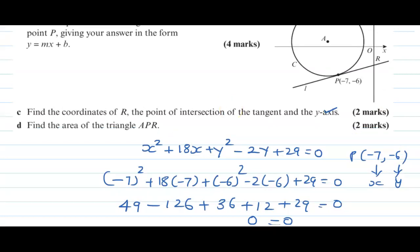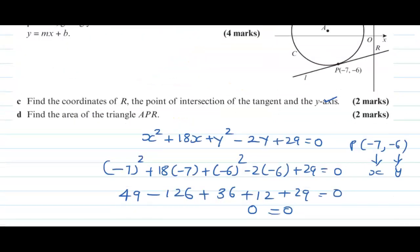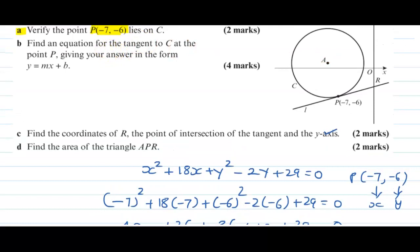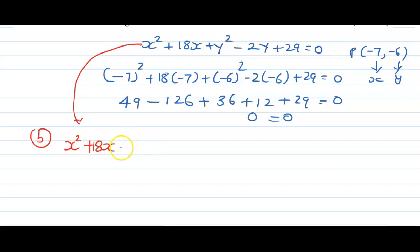Now for part B — find the equation of the tangent to C at P, giving your answer in the form y = mx + b. Whenever you get this type of equation, try to use completing the square. Our equation is x² + 18x + y² − 2y + 29 = 0. Completing the square gives (x + 9)² + (y − 1)² = 53.